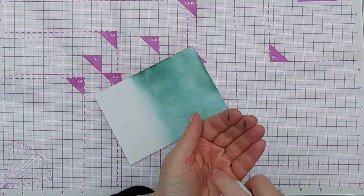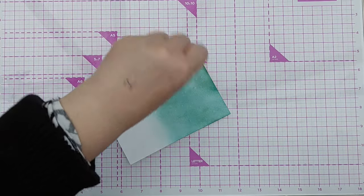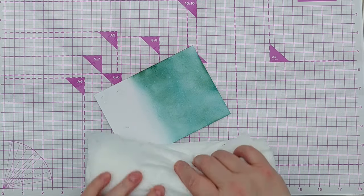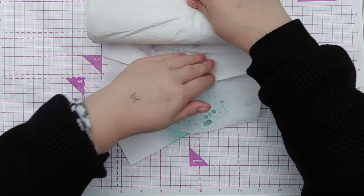To add a bit of visual texture to the ink I splattered on some water and then mopped it up with a paper towel.